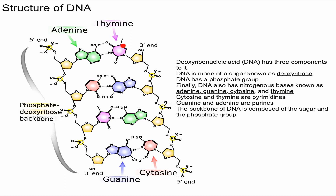If you look at thymine, which has one ring, and cytosine, which also has one ring, you can see they look relatively similar as well. So we categorize cytosine and thymine as pyrimidines. A pyrimidine is always going to bond with a purine.